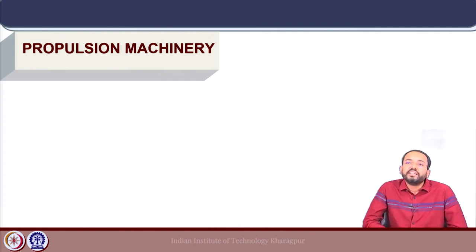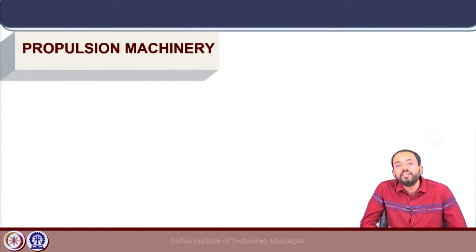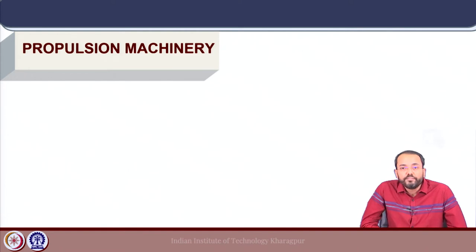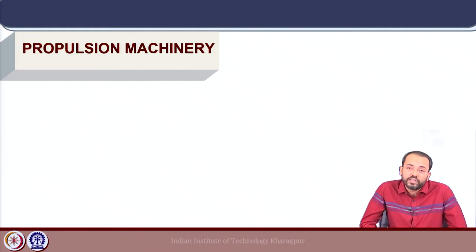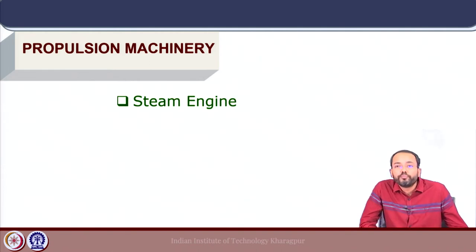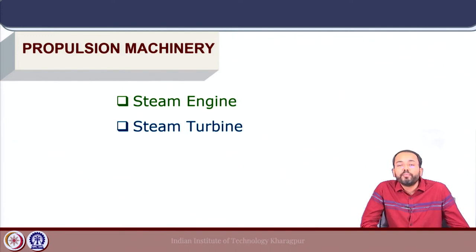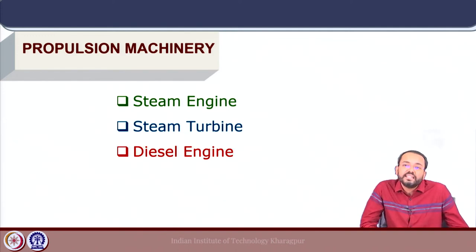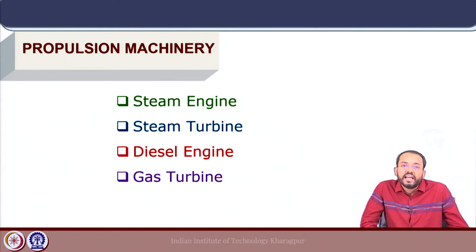The development of propulsion worked alongside the development of marine machinery. The engine supplies the delivered power to the propeller, and its development over history is very important to ship propulsion in general. The earliest propulsion machinery used was the steam engine, followed by the steam turbine, then the diesel engine. Diesel engines are now the most widely used form of propulsion machinery in modern ships. Gas turbines are also used for specific high-speed applications.